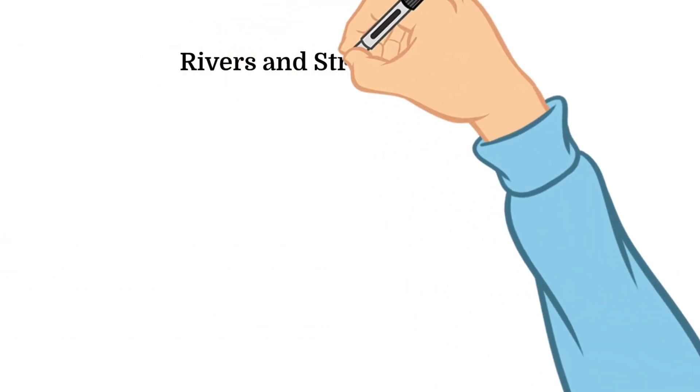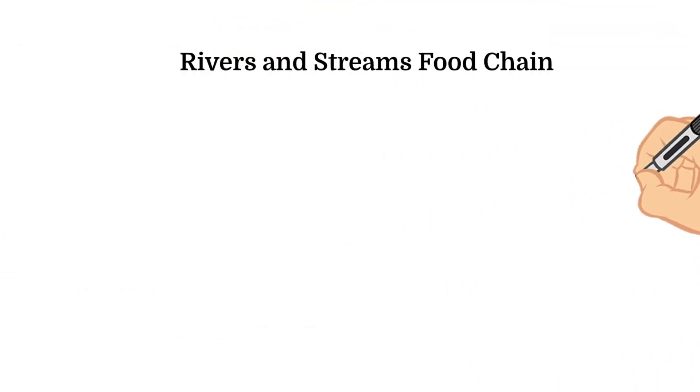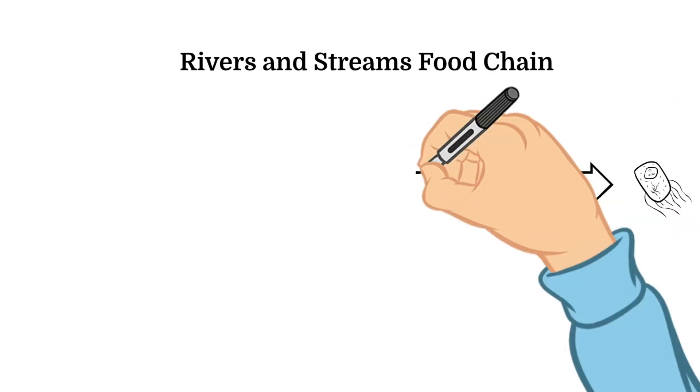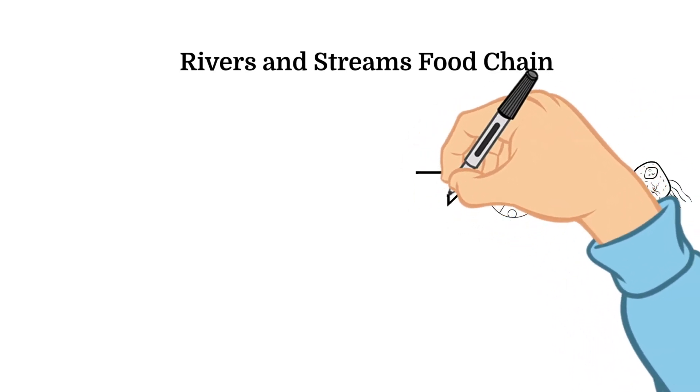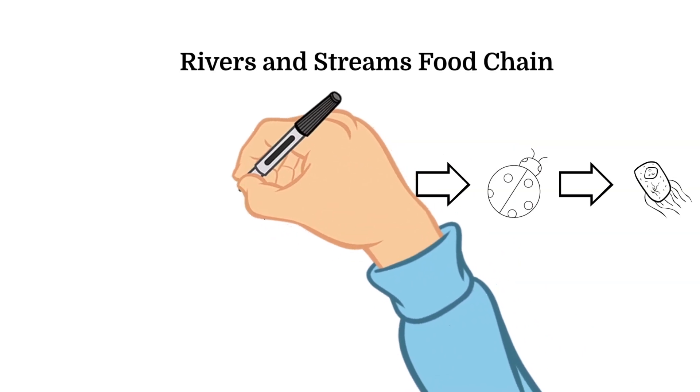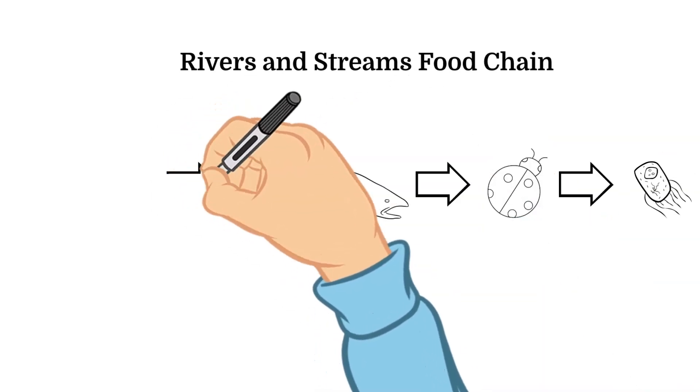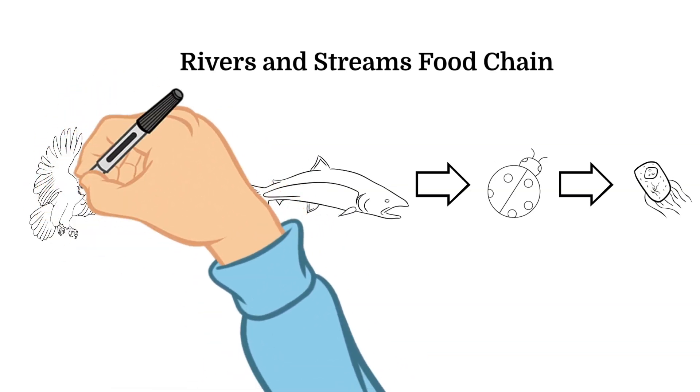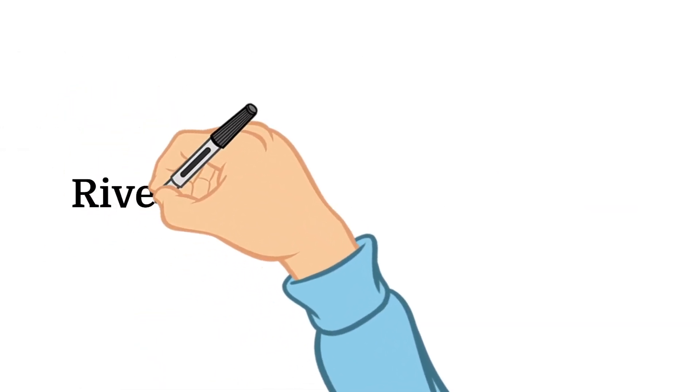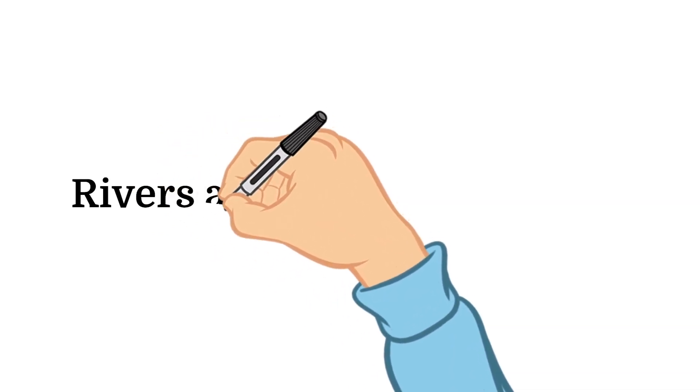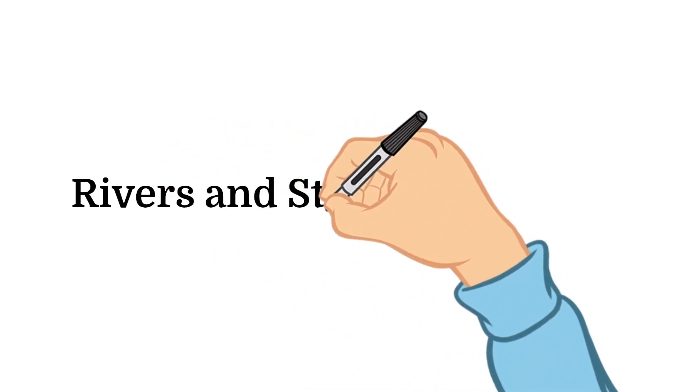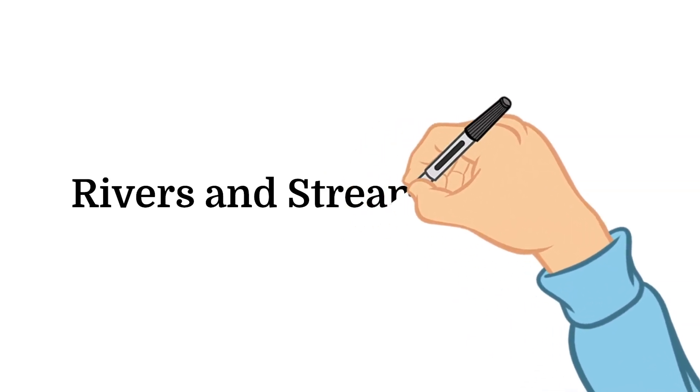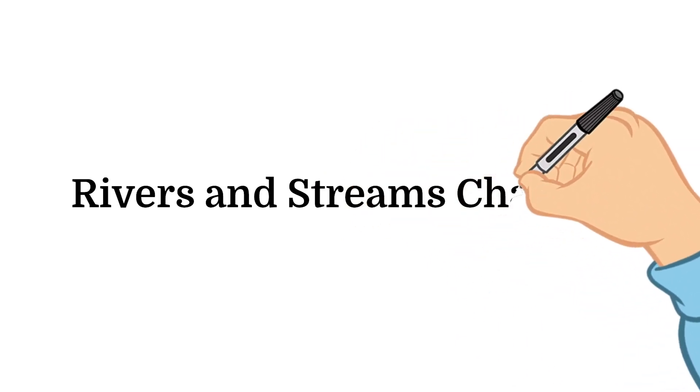The food chain in rivers and streams goes oftentimes like this: microscopic organisms, then insects which eat the microscopic organisms, and then fish which eat the insects, and then birds and other animals that live near the river or stream which feed on the fish. It's important to note that rivers change over time due to the sediment that is brought downstream. They meander through the landscape and change the speed in which they flow due to these things.